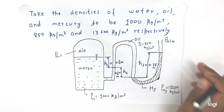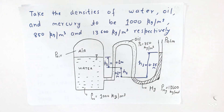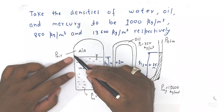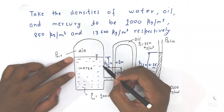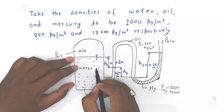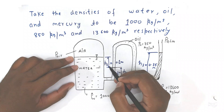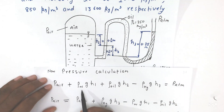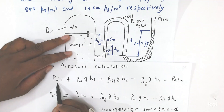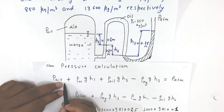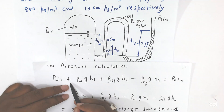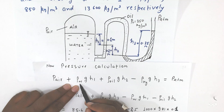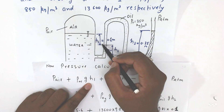Now we will consider the pressure. Suppose the air pressure is PA. We will start from the tank and go down to the bottom. Here, pressure equalization is there, so we will take only this height. So we add rho_w (density of water) into g into h1, coming down — positive. Here pressure equalization is there, so we consider only this h1.